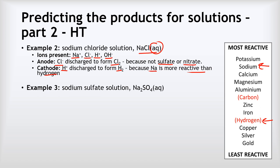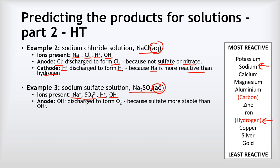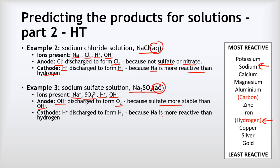Example number three: sodium sulfate solution, Na2SO4(aq). The ions present from the sodium sulfate are Na+ ions and SO42- sulfate ions, and also, because it's an aqueous solution, we've got hydrogen ions and hydroxide ions from the water breaking down. At the anode, because sulfate is more stable than hydroxide, the hydroxide will be discharged instead of the sulfate, meaning we will form oxygen gas. And at the cathode, because sodium is more reactive than hydrogen, the hydrogen ions from the water will get discharged to form hydrogen gas.